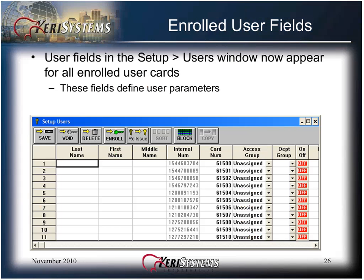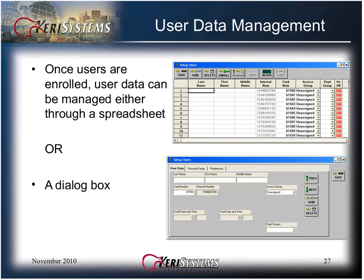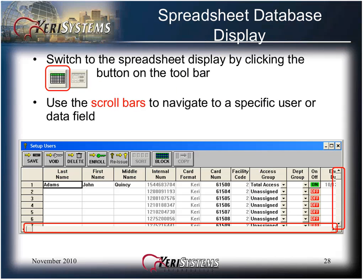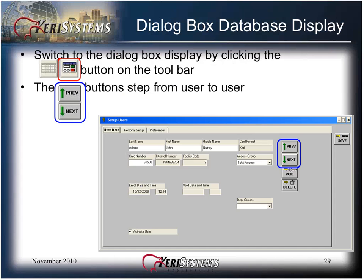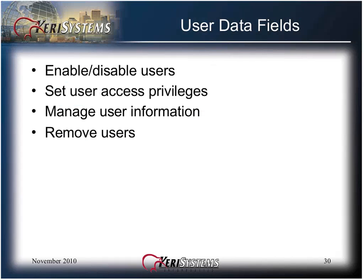The user fields in the Setup Users window now appear for all the enrolled user cards. These fields define the user parameters. Once users are enrolled, user data can be managed either through a spreadsheet or a dialog box. Click the toolbar button and use the scroll bars to navigate to a specific user or data field, or click the dialog box button on the toolbar and use the previous and next buttons to step from user to user. With the user data fields, you can enable or disable users, set their user access privileges, manage user information, or remove the users.